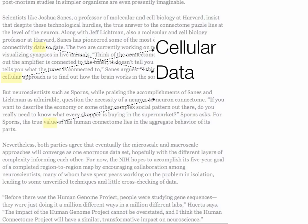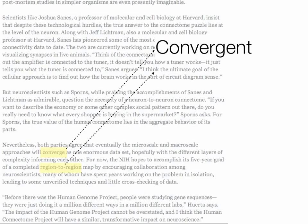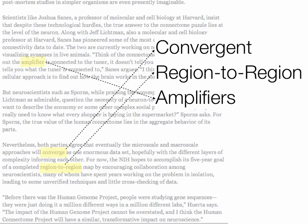Cellular data values. I scanned the page and quickly grabbed words and arranged them into something that looks like a term, kind of like a concept. Let's try one more: convergent, region to region, amplifiers. We do that pretty quickly — we trust our intuition and improvise.